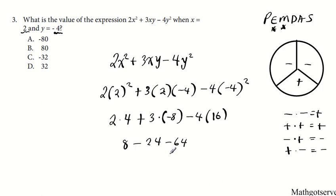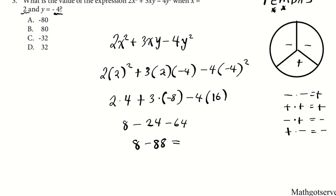Now when we're adding and subtracting, we can do two at a time. Let's combine these together: we have 8 minus 24 minus 64, which is minus 88. Wait — it's easier to combine 8 and the rest: 8 minus 24 minus 64 gives minus 80. When the signs are different, you subtract and keep the sign of the bigger one, so the answer is negative 80. Your answer here is option letter A.